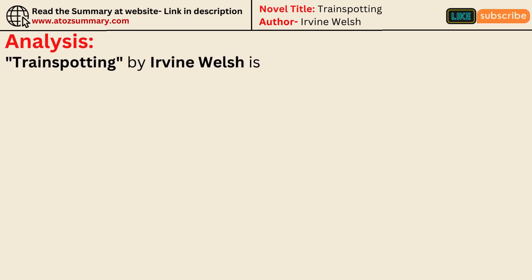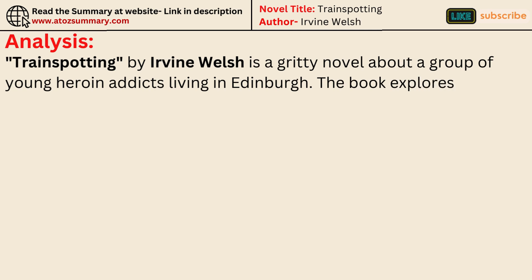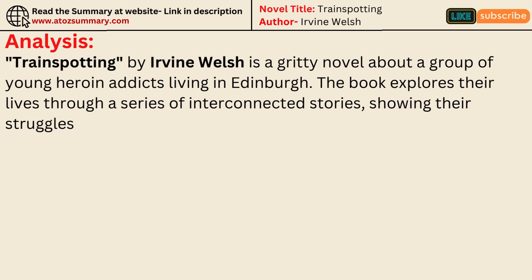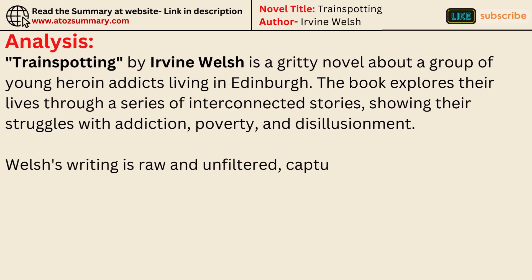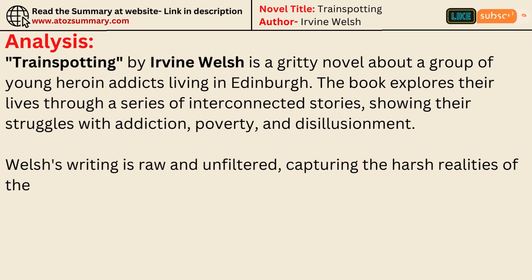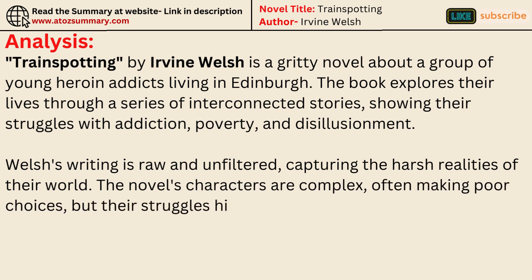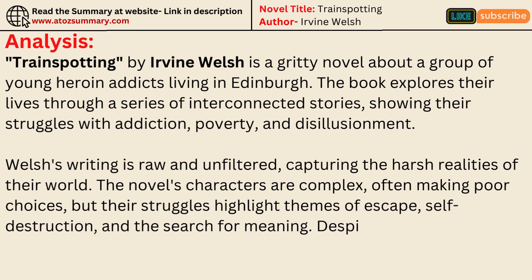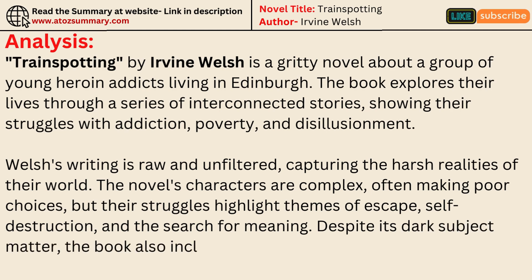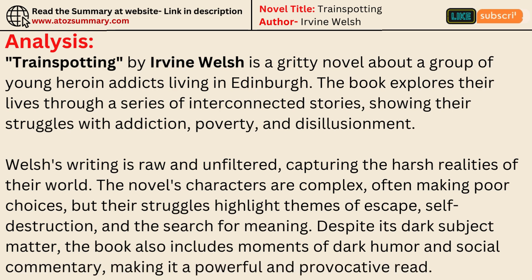Trainspotting by Irvine Welsh is a gritty novel about a group of young heroin addicts living in Edinburgh. The book explores their lives through a series of interconnected stories, showing their struggles with addiction, poverty, and disillusionment. Welsh's writing is raw and unfiltered, capturing the harsh realities of their world. The novel's characters are complex, often making poor choices, but their struggles highlight themes of escape, self-destruction, and the search for meaning. Despite its dark subject matter, the book also includes moments of dark humor and social commentary, making it a powerful and provocative read.